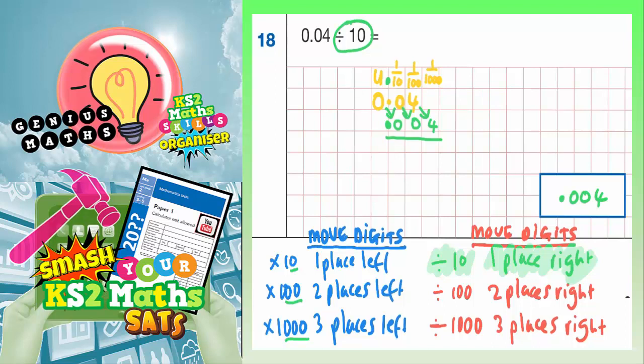because there's nothing in the units column, we always fill the units column in with an extra 0. So what we're actually looking for is 0.004. And that's what we should be writing in our answer box, 0.004.